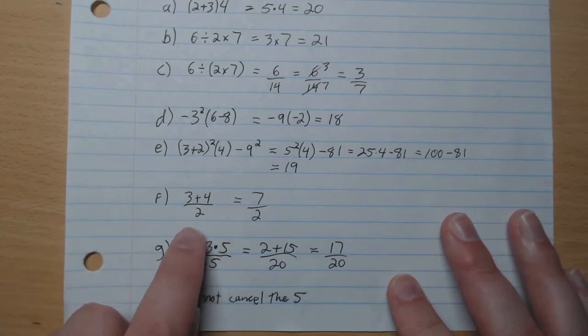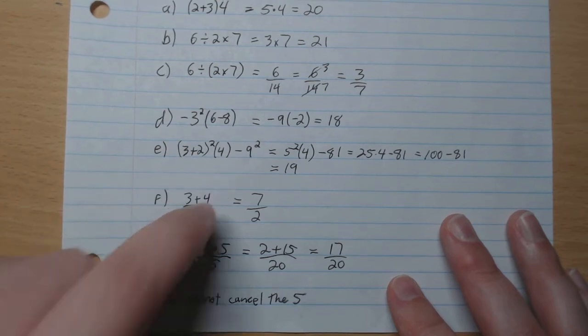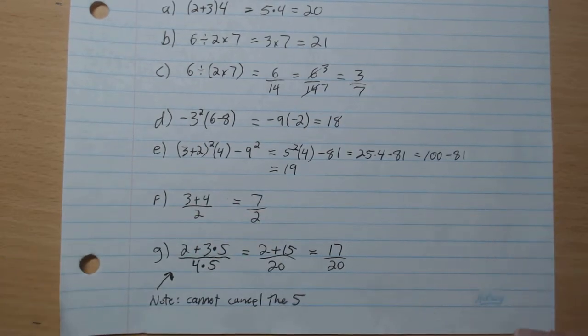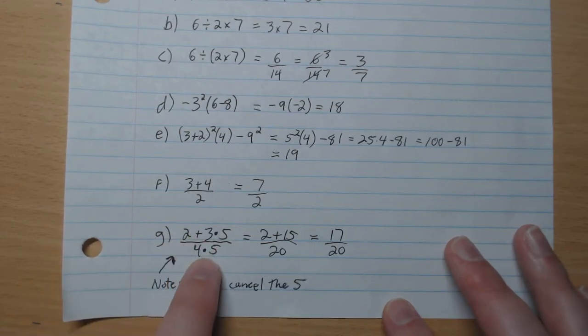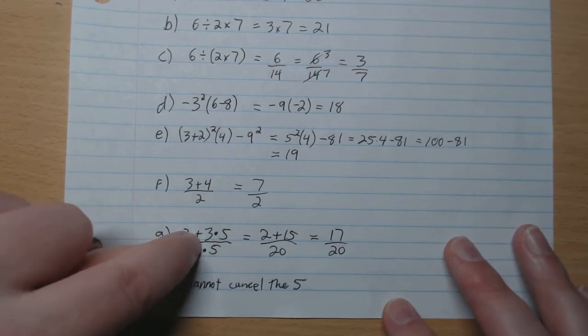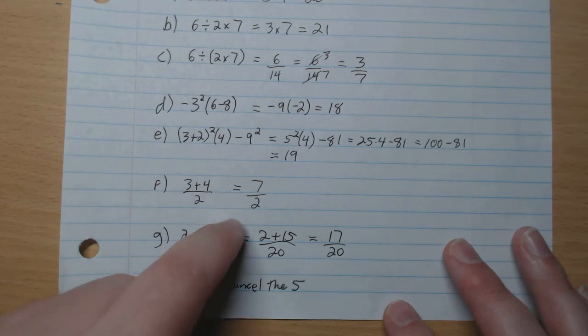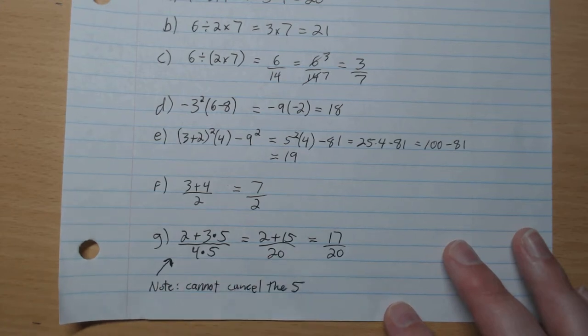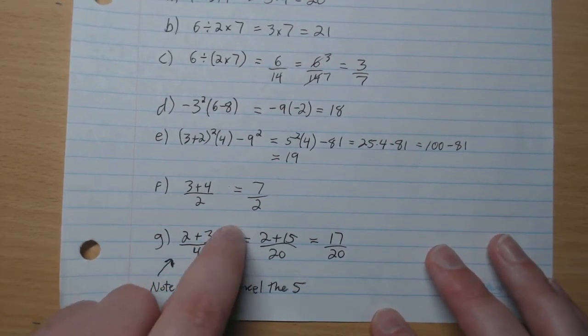F. 3 plus 4 over 2. So this is all of 3 plus 4 divided by 2. So it's as if there's brackets there. So all of 3 plus 4 is divided by 2. So this gives 7 over 2. G. 2 plus 3 times 5 over 4 times 5. So the big picture is all of this divided by all of that. So we'll start with our BEDMAS. So we got multiplication comes first, 15. So we have 2 plus 15 divided by 20, which gives 17 over 20 as our final answer.